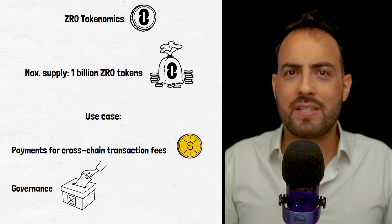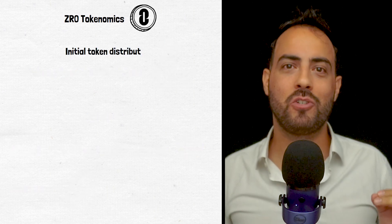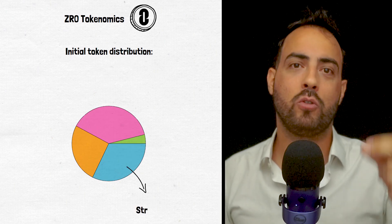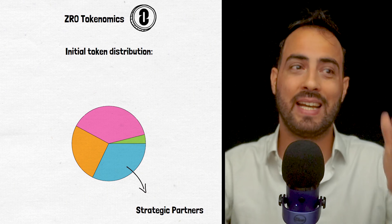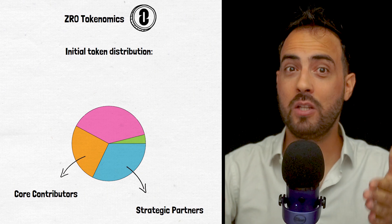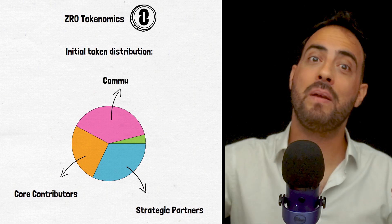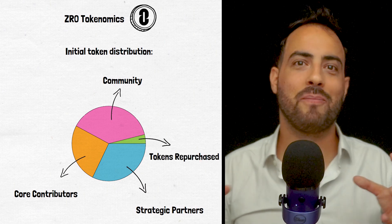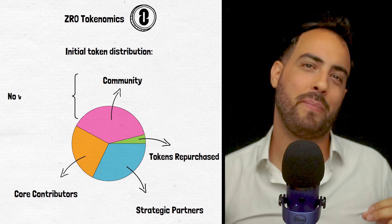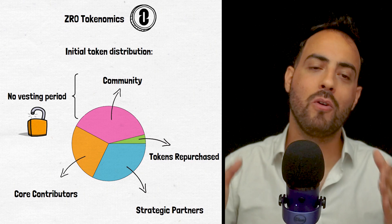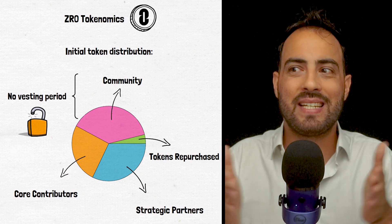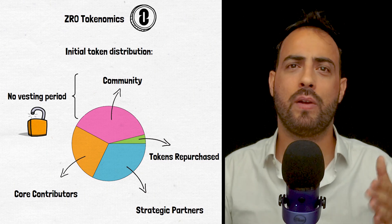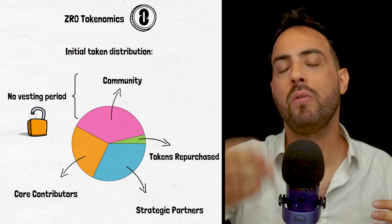After all the tokens have been distributed, the initial token distribution will look as follows: Strategic partners will have received 32.2%, followed by core contributors getting 25.5%, the community will have received 38.3%, before token repurchases make up the final 4%. The 38.3% that makes up the community portion has no vesting period and has been immediately available to those eligible. The remaining 61.7% will be distributed starting July 2025 and will have ended by July 2027.